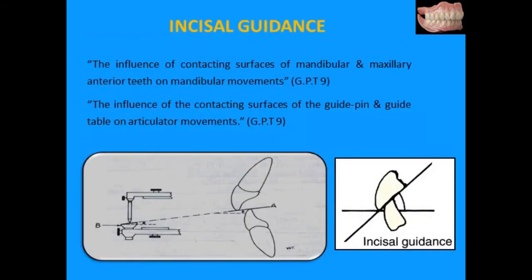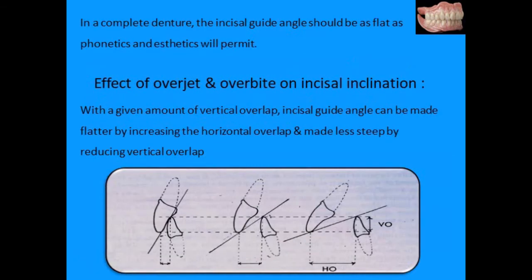Incisal guidance is the second factor of occlusion. GPT-9 defines it as the influence of the contacting surfaces of the mandibular and maxillary anterior teeth on mandibular movements, or the influence of the guide pin and guide table on articulator movements. During protrusion the incisal edge of the lower anteriors moves forward and downward along the palatal surface of the upper anteriors — this pathway is the protrusive path. The angle formed by the protrusive path to the horizontal plane is the incisal guide angle. Incisal guidance is determined according to aesthetics, phonetics, and function, and should be as flat as phonetics and aesthetics permit.